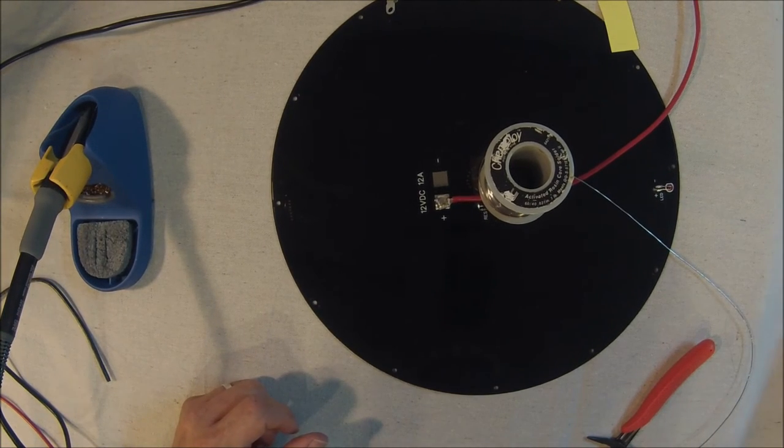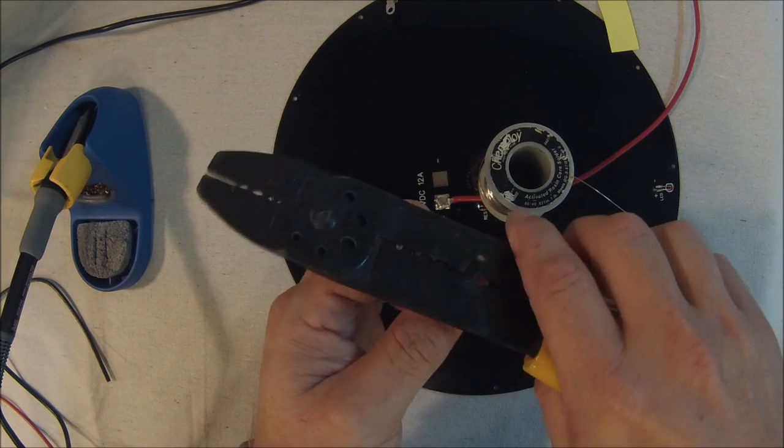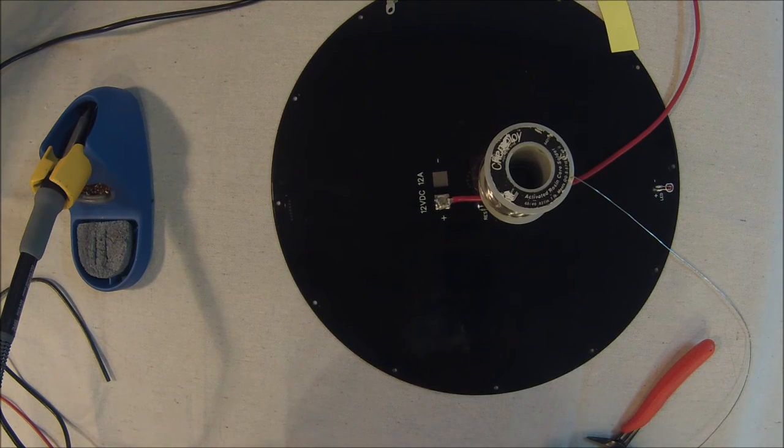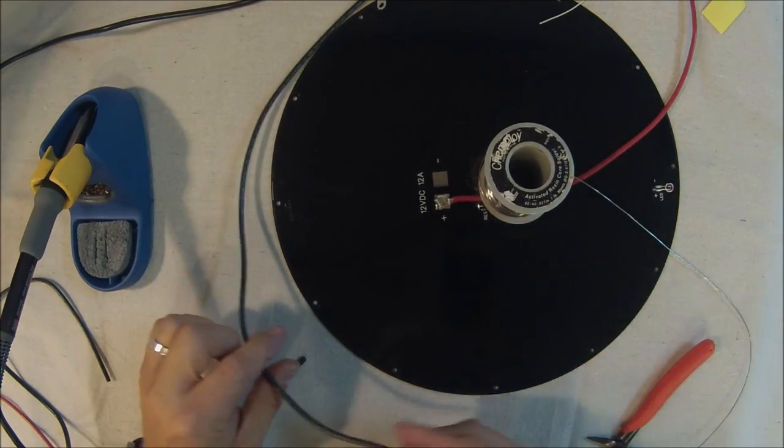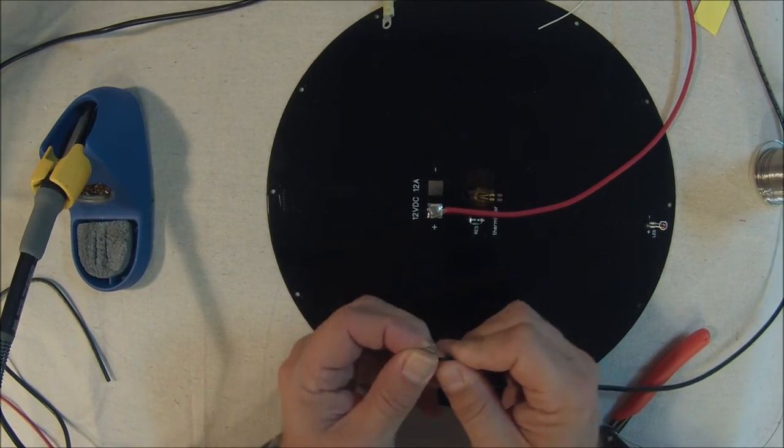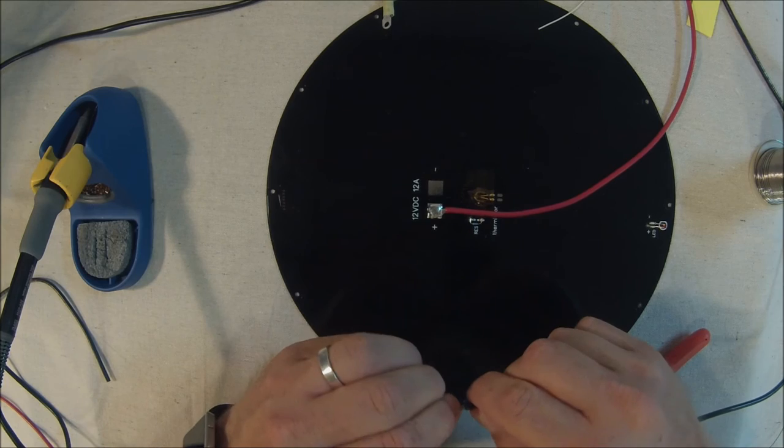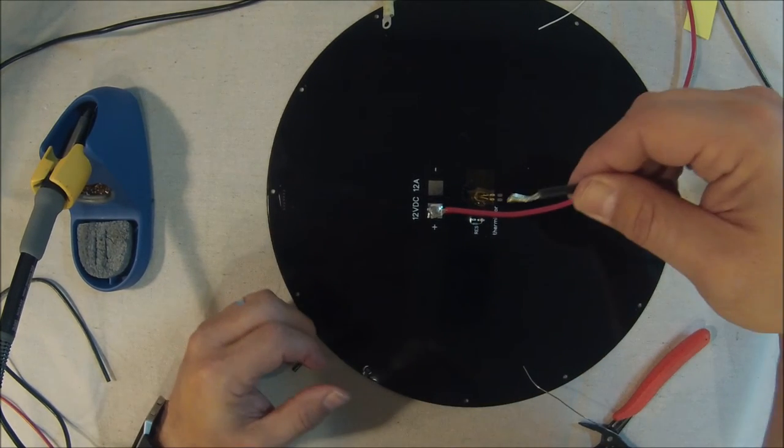And while that's cooling let's go ahead and strip the one end off of the 12 gauge black wire. And again we're going to take about a half inch or so and fan this out. Put a bend in it like so.